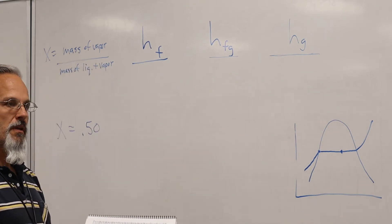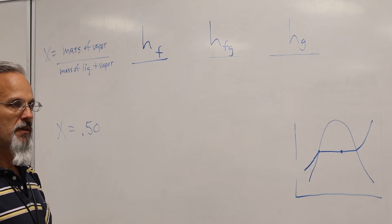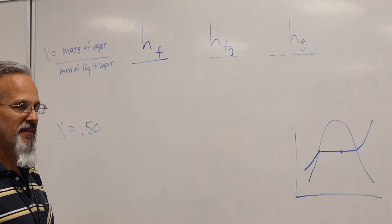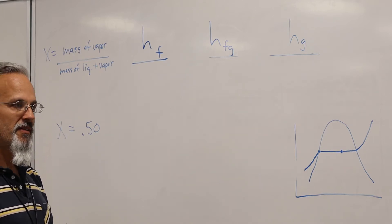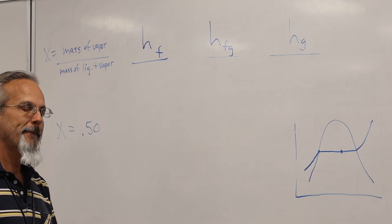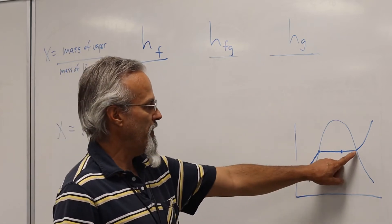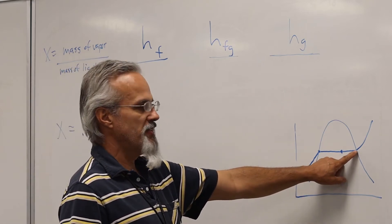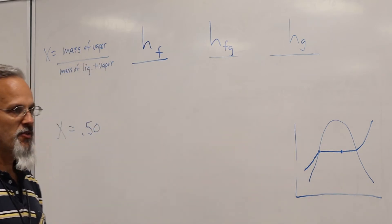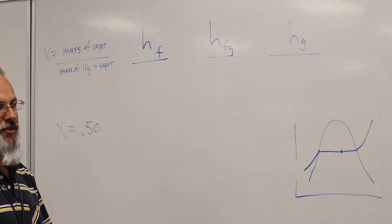H sub F is on that saturation line — the curve we talked about earlier. It's 100% liquid, right at the point where it's starting to convert all those molecules, starting to absorb latent heat, and you start converting to steam. And then H sub G is at the exact other extreme — you're at 100% vapor, that very last molecule of water converted from liquid to gas. Saturated steam.